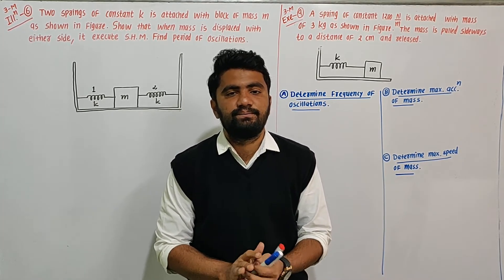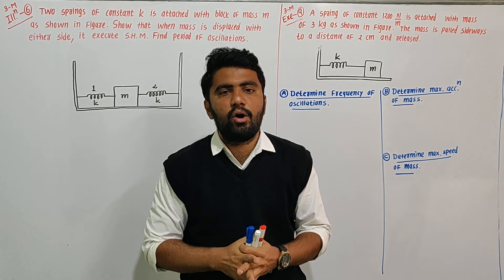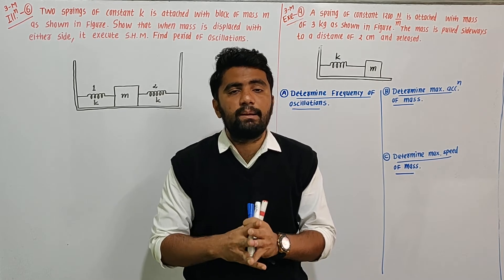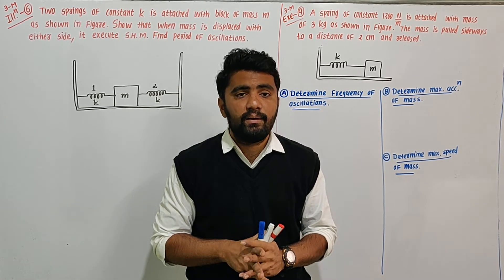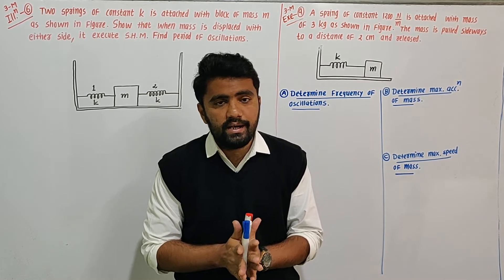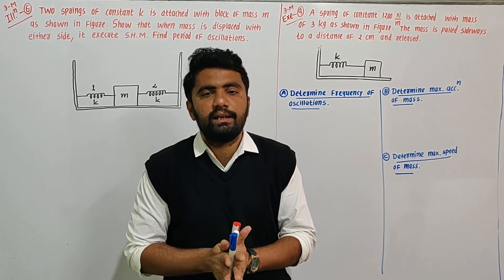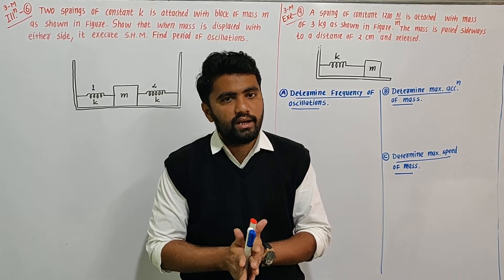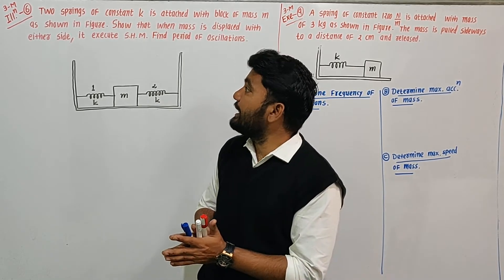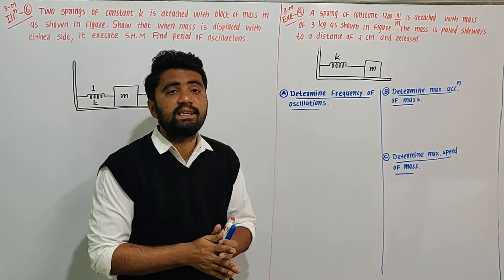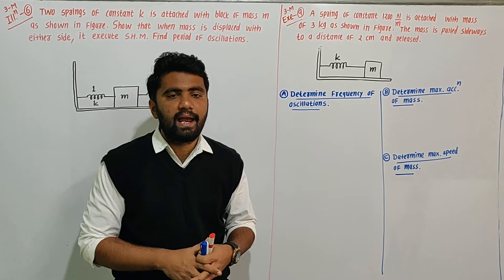Good morning students. We discussed the period of oscillations for simple harmonic motion — we covered the theory and solved numericals in the last lecture. Now we will solve two numericals from the last lecture: illustration number 6 and exercise number 9. Let's take a look at exercise number 9.